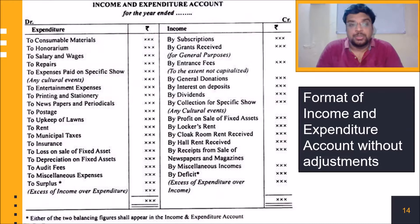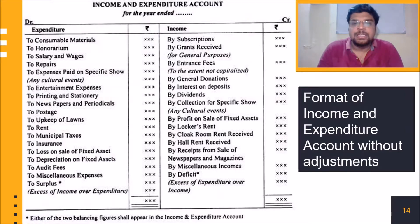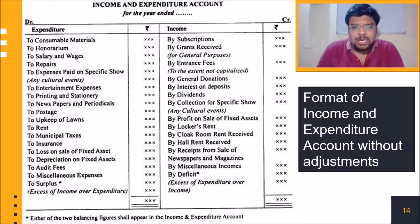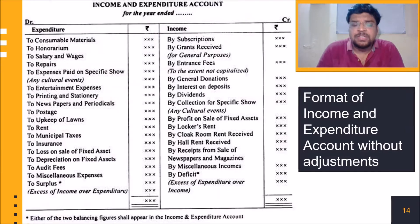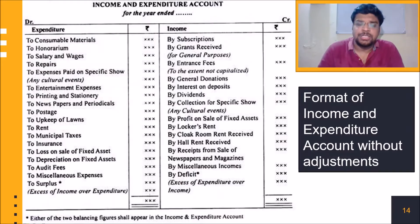Now you can see a format of the income and expenditure account without adjustment. On the debit side all expenses are written, and on the credit side all incomes — like subscription, entrance fees, general donations, grants from government or other organizations (revenue nature items only, not capitalized), and interest on deposits and dividends from investments.